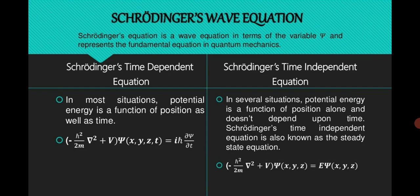In most situations in the time-dependent form, potential energy is a function of position as well as time. In that equation there is a term on the right side: iℏ ∂ψ/∂t — that's why it is time-dependent. But in Schrödinger's time-independent form, there is no such term ∂ψ/∂t with respect to time — that's why it is independent. In several situations, potential energy is a function of position alone and doesn't depend upon time. Schrödinger's time-independent equation is also known as the steady-state equation.